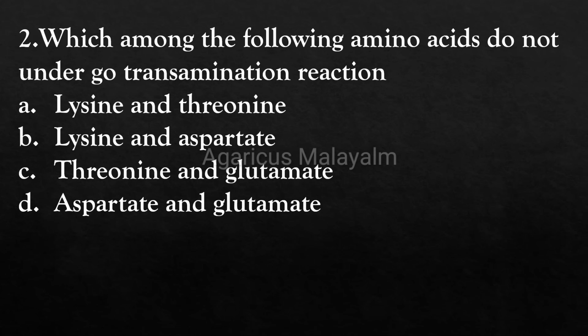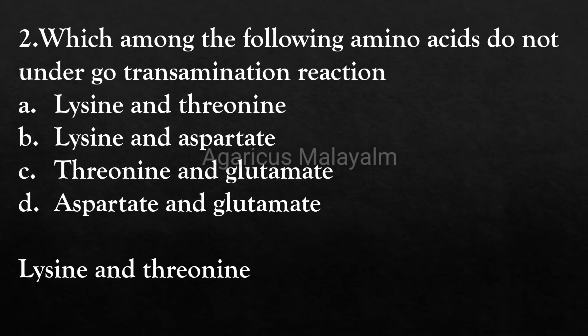Second question: Which among the following amino acids do not undergo transamination reaction? Answer options: Option A - lysine and threonine, Option B - lysine and aspartate, Option C - threonine and glutamate, Option D - aspartate and glutamate. Correct answer: Option A - lysine and threonine.